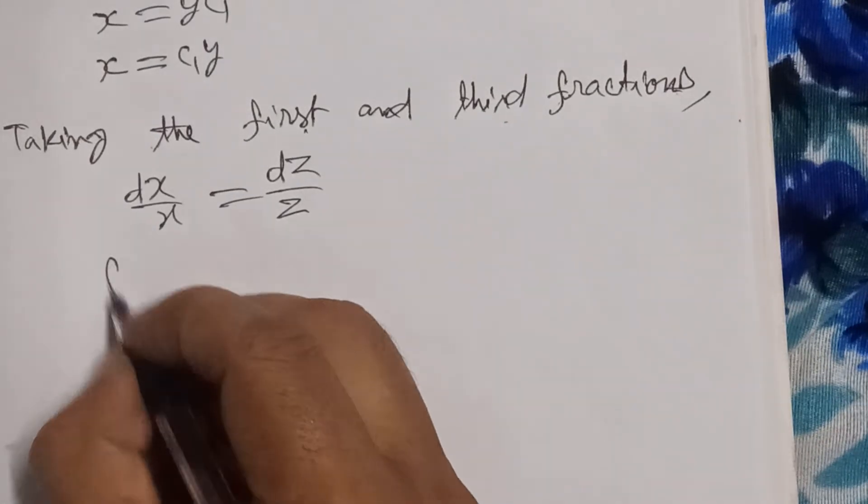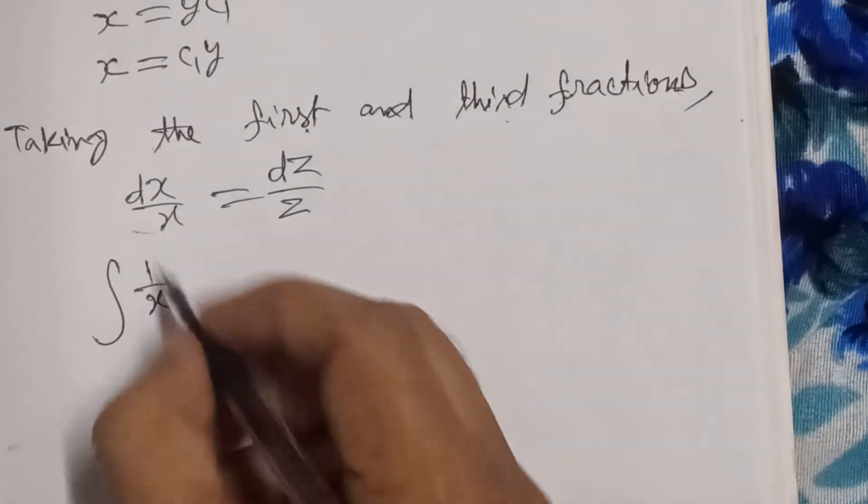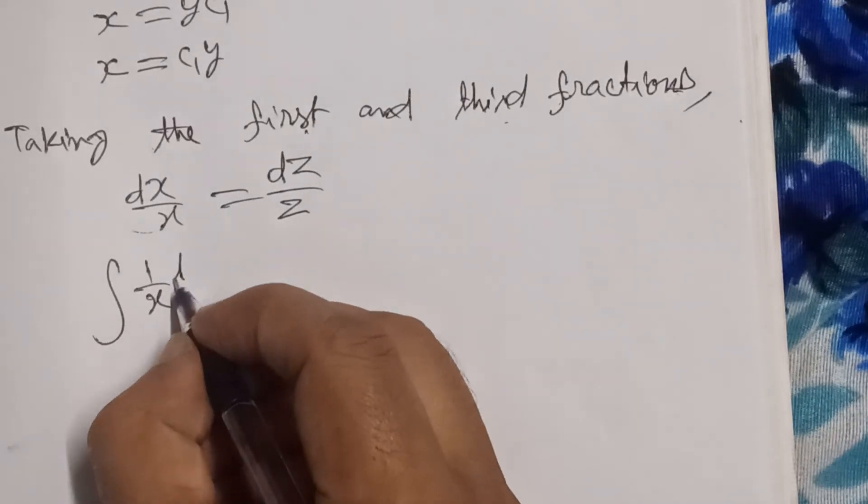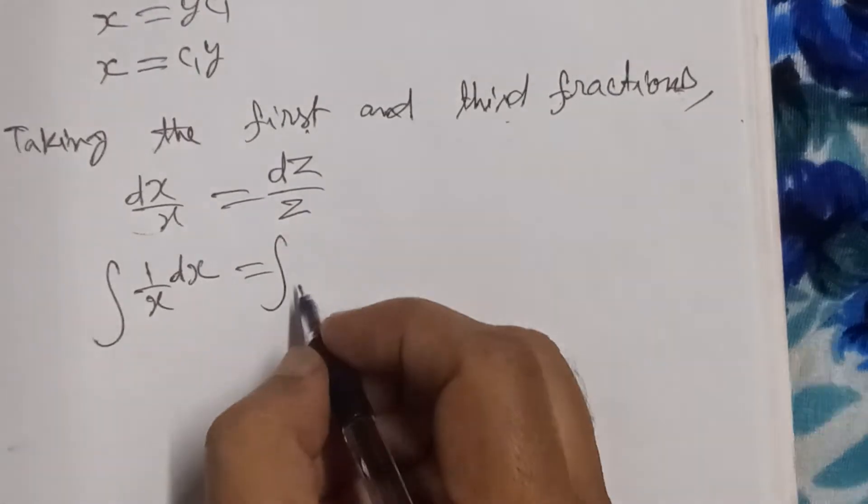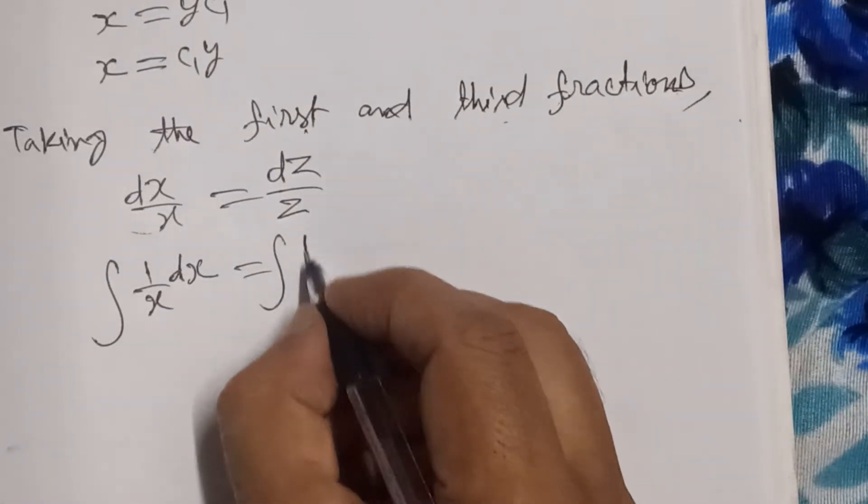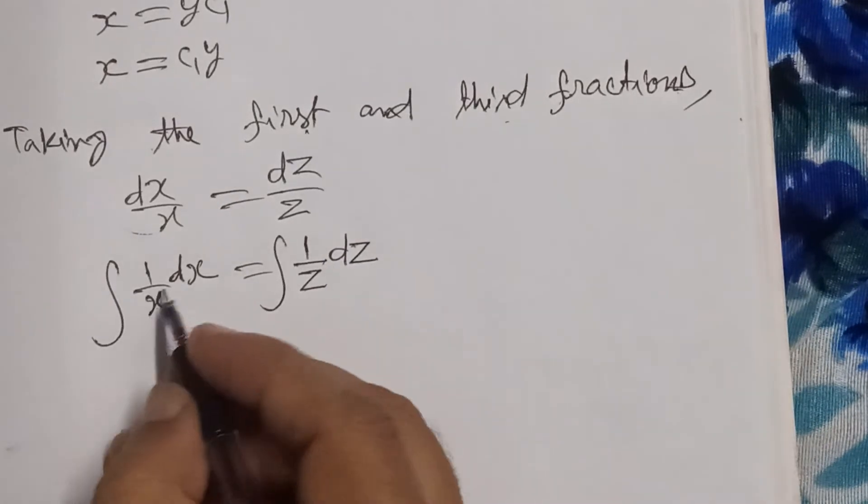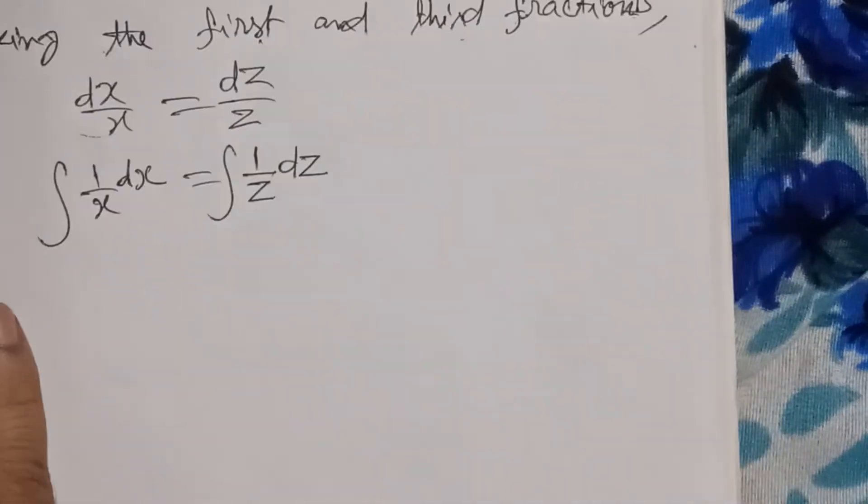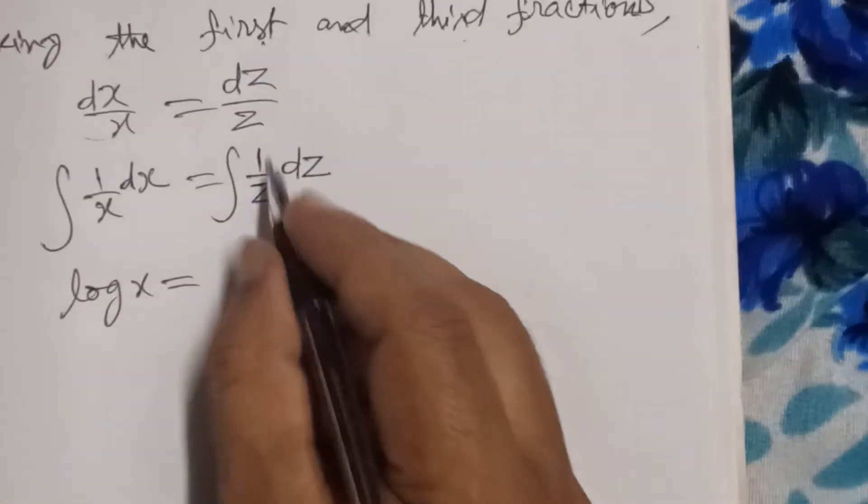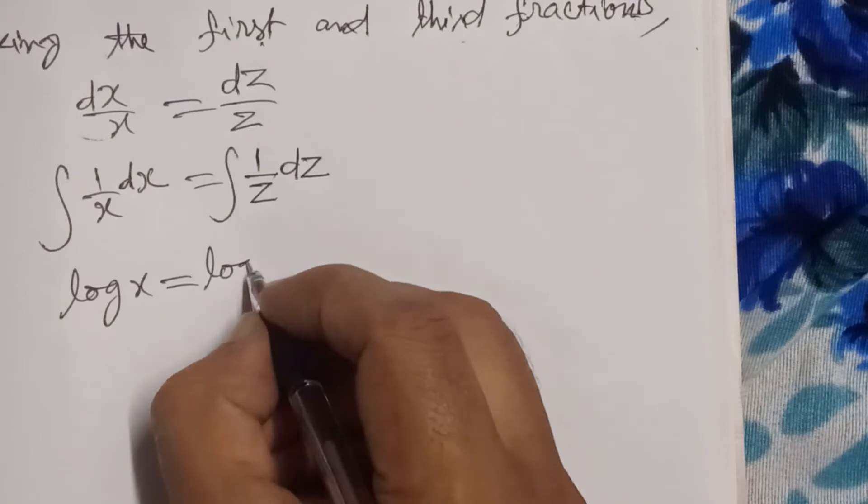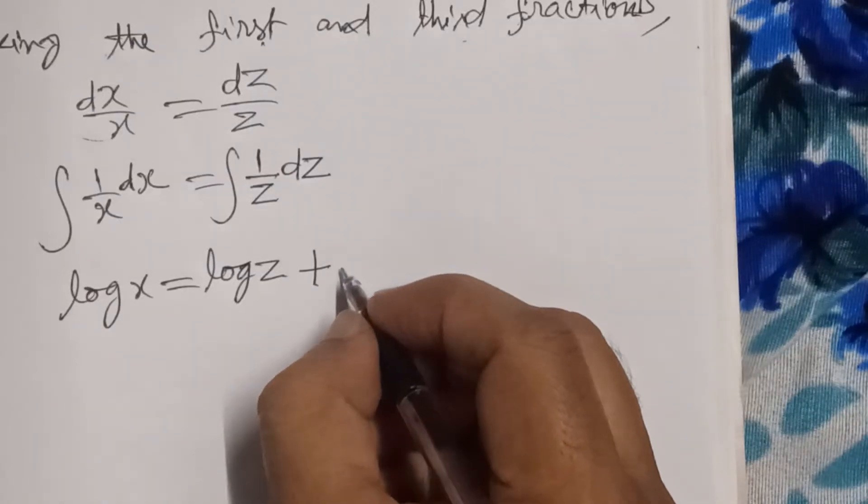The first term will integrate with respect to x, and the second term, which is on the right-hand side, will integrate with respect to z. We know that the integral of 1/x equals log x, and the integral of 1/z equals log z, plus a constant of integration.